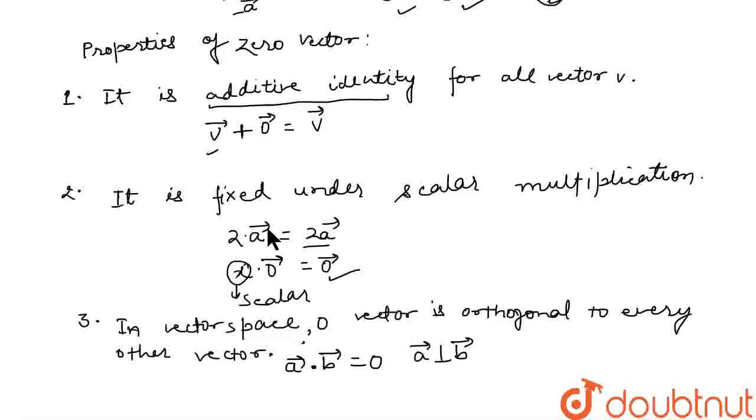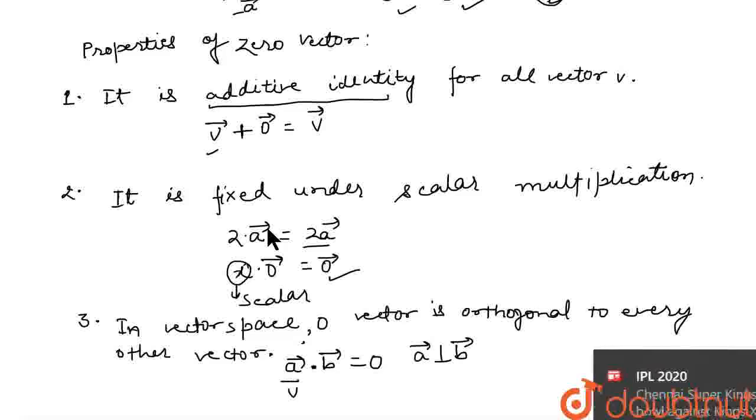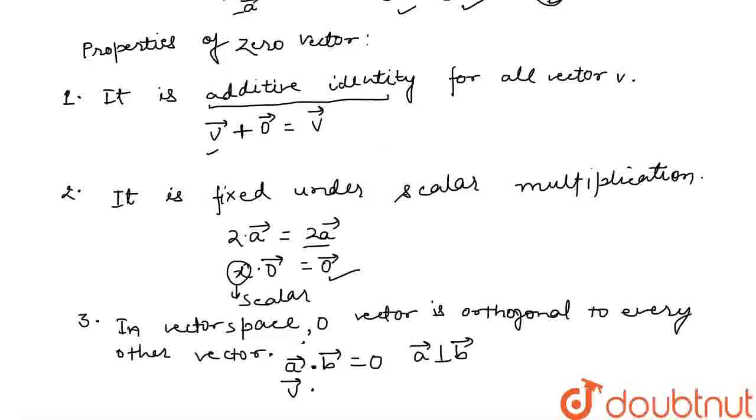So if we take the dot product of any general vector v with zero, we'll get zero. Therefore, zero vector is orthogonal to this v, to any other vector. I hope it's clear. Thank you.